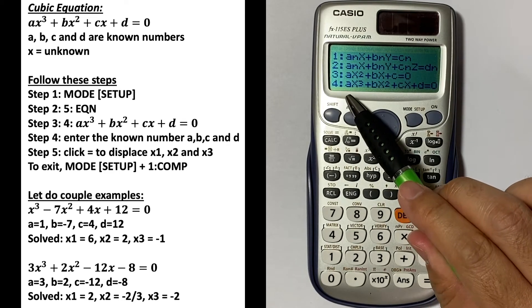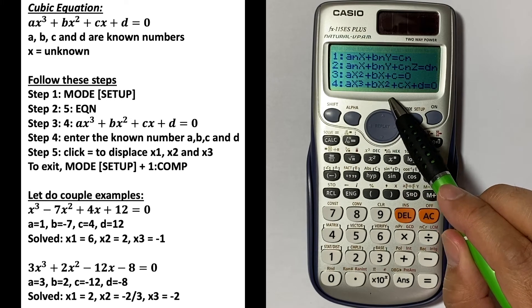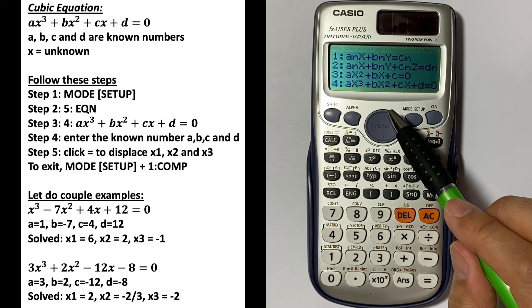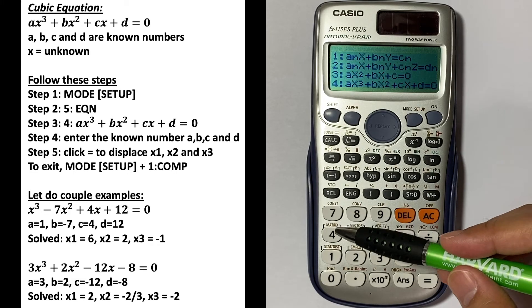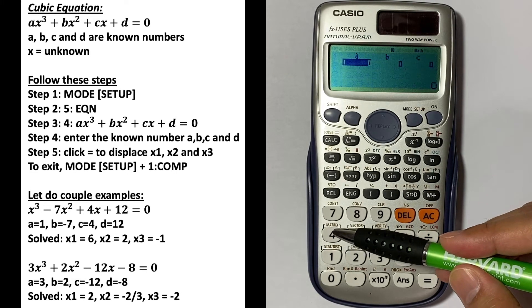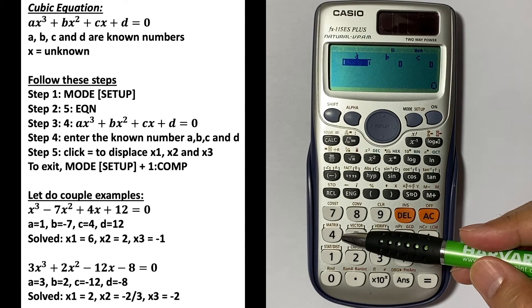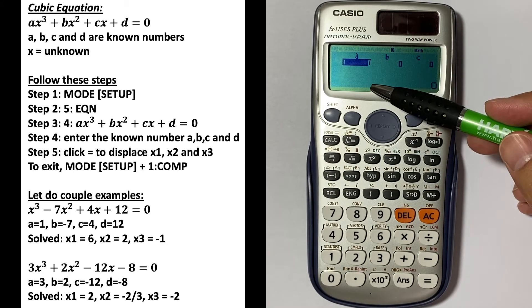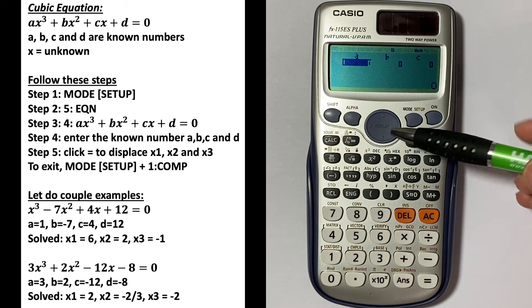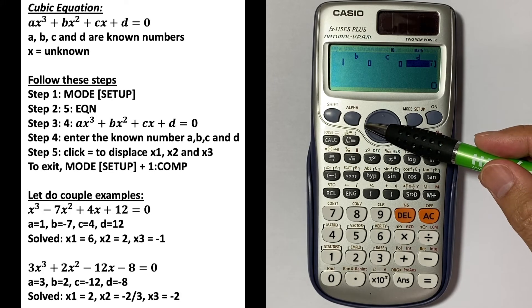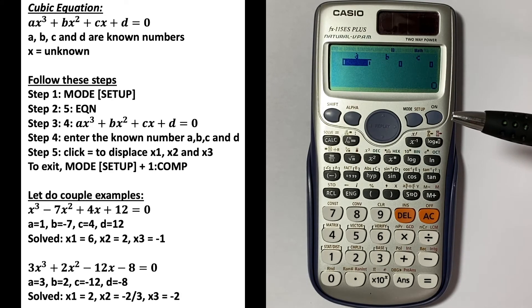We want to look at number 4: ax³ + bx² + cx + d = 0. This is the one we want to choose. Click 4 and here we will enter the unknowns which are a, b, c, and d. If you click across, you can see where we put in the information. To exit, just click MODE and then 1 to go back to the original screen.